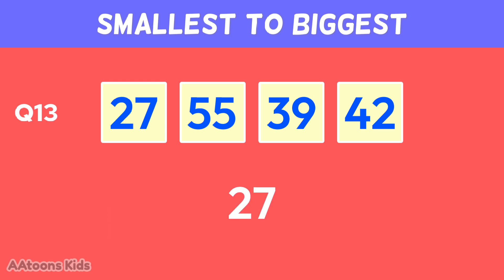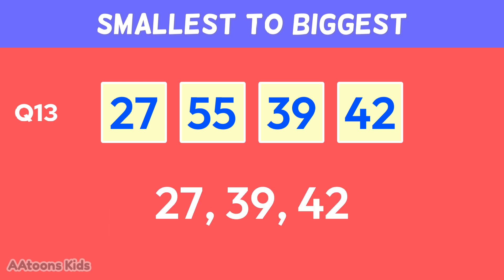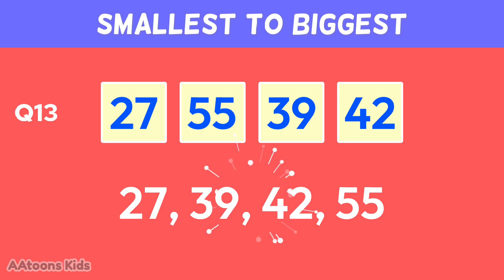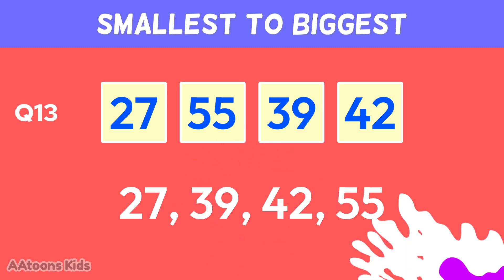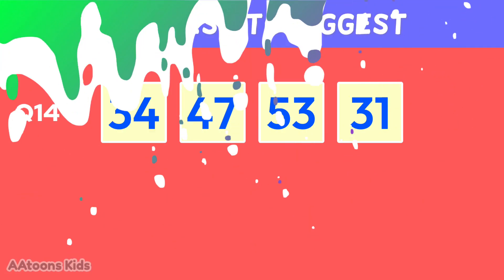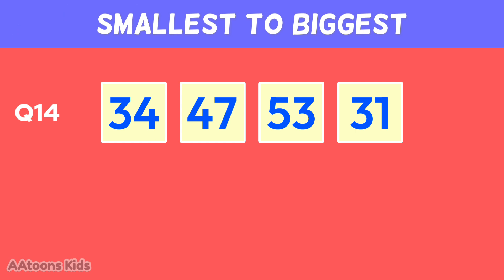Arrange these numbers from smallest to biggest: twenty-seven, thirty-nine, forty-two, fifty-five.